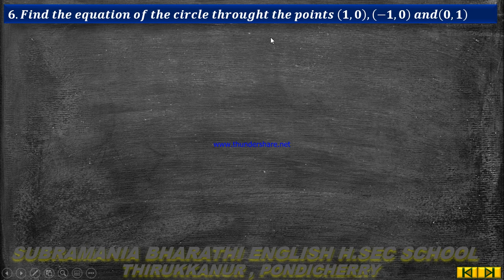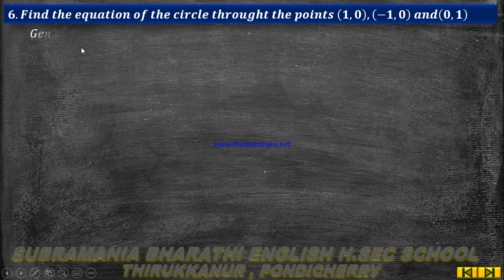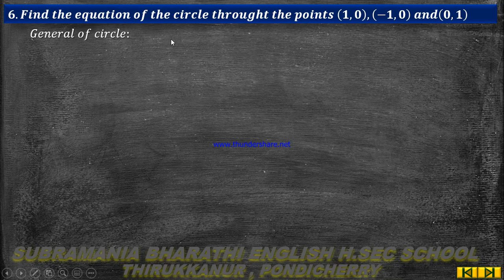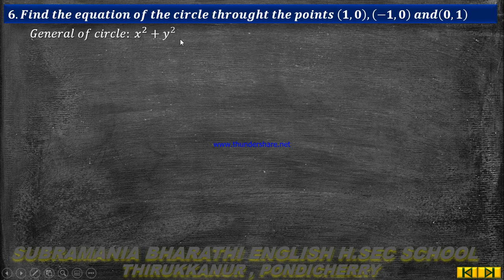In this video on equations of circles through 3 points, first we write the general equation of a circle: x squared plus y squared plus 2gx plus 2fy plus c equal to 0.